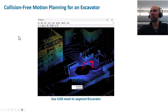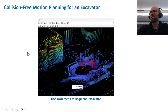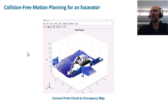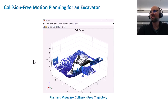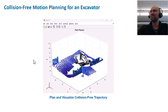The first step was to use the CAD mesh from the import to actually segment out the excavator from our point cloud. Then we convert this point cloud to a 3D occupancy map, and we can visually insert our mesh to confirm that everything lines up. From there we can plan and visualize a collision-free trajectory for our excavator that doesn't hit anything in our environment.